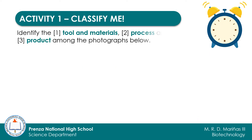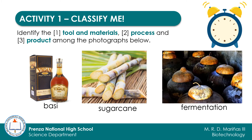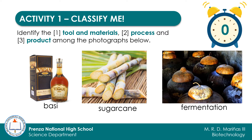Let us start with the first set. Classify BASI, sugar cane, and fermentation into tools and materials, process, or product. The answer is: BASI is a product, sugar cane is a tool or a material, and fermentation is a process.